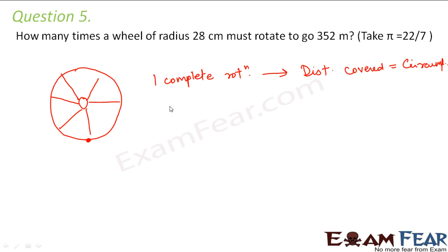What is the circumference of this wheel? Let us find out the circumference. For this particular wheel, the circumference would be 2πr, that is 2 × 22/7 × r, which is 28 centimeters. This equals 44 × 4, which equals 176.